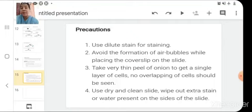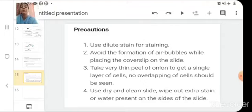You need to be very careful when you are conducting any experiment. So precautions are very important part of your experiment. Precautions which need to be followed during this particular experiment are: use stain which is dilute, not concentrated. If you will use concentrated stain, then your slide sample will get overstained, over colored. In that case you will not be able to see nucleus or cell wall or other contents. So it should be actually moderately stained. Then second precaution is avoid the forming of air bubble while placing the cover slip onto the slide. And the third one is take a very thin peel of onion to get a single layer of cell. No overlapping of cell should be seen. Then the last precaution is use dry and clean slide. Wipe out extra stain or water present onto the slide. Thank you.